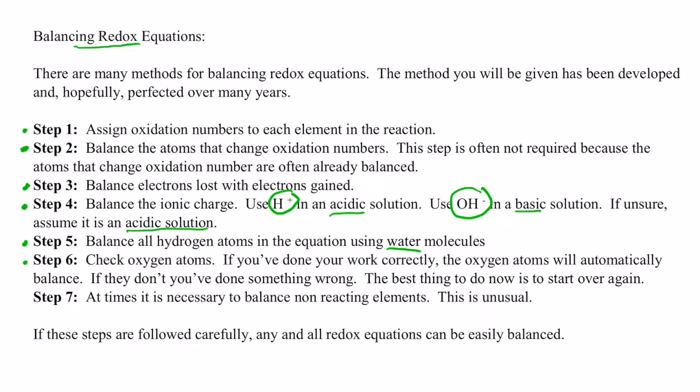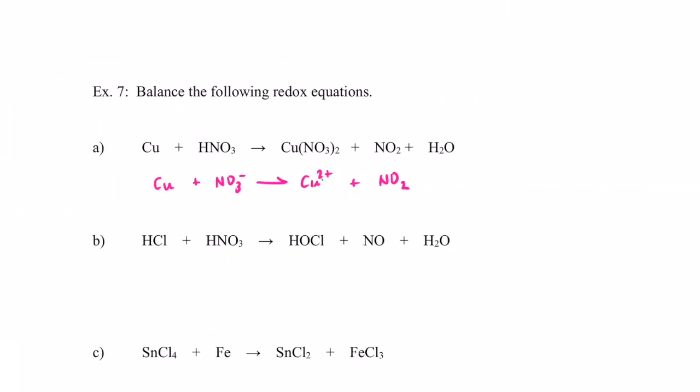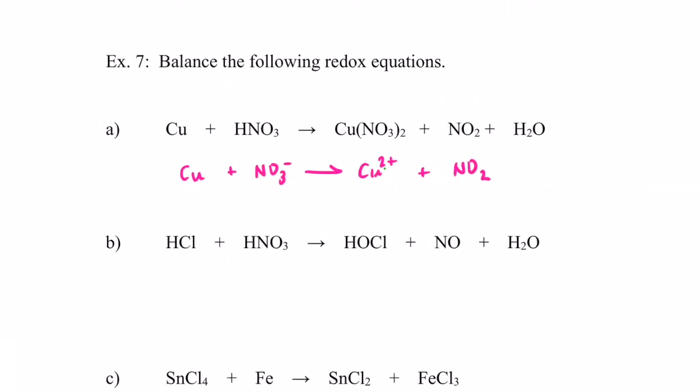And finally the last step — this is another one that's not often used — but sometimes there are non-reacting elements and they need to be balanced at the very end. Step seven we don't do oftentimes. Now if you follow these seven steps, you should be able to balance all redox equations. So the best way to learn this is by working through examples, so if you follow with me to the next page, to example seven, we have several for us to do.